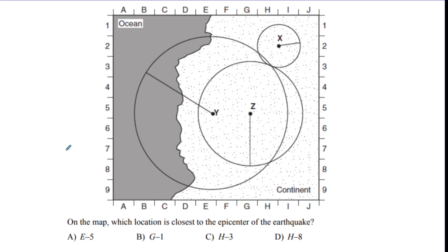Last question: which map location is closest to the epicenter? It's going to be the intersection point between all three circles — which looks like H3. The answer is C. The earthquake chart can be a little confusing, so if you need to, rewind and go back to where I explained the chart, try the questions again, and watch my explanations again. I covered every type of question you can get, so if you understand these, you'll be able to do any of them. Good luck on your tests and for the rest of the school year — I'll talk to you soon. Bye!